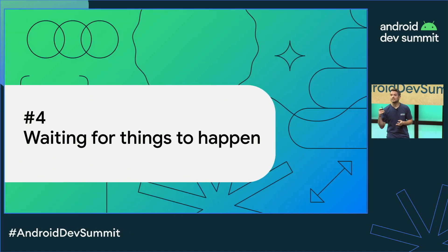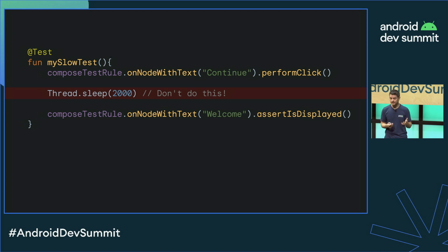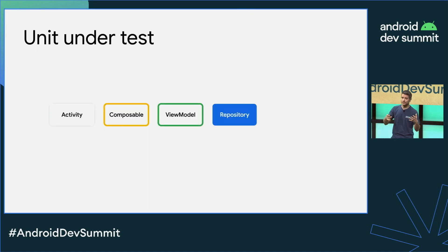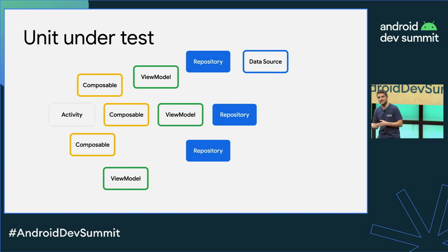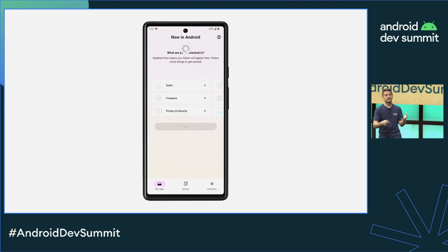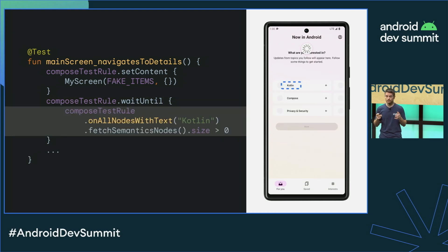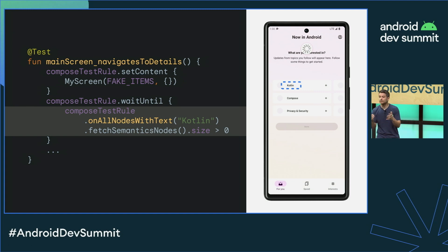Speaking of time, the next one is about waiting for things to happen. You should never sleep in your tests, and you can rely on automatic synchronization instead. However, as tests grow in scope, it gets harder to deal with all the asynchronous operations going on, and in end-to-end tests it might not even be worth it. Instead, we can tell the test to wait until something happens. There's a Compose API called waitUntil that I really like for this scenario. It will pause your test until its body is true, so you can look for a particular element or do whatever you need to synchronize your tests without waiting for an arbitrary time.